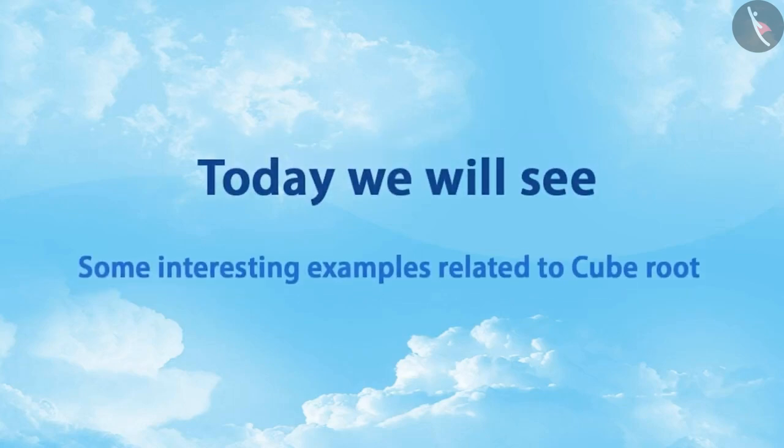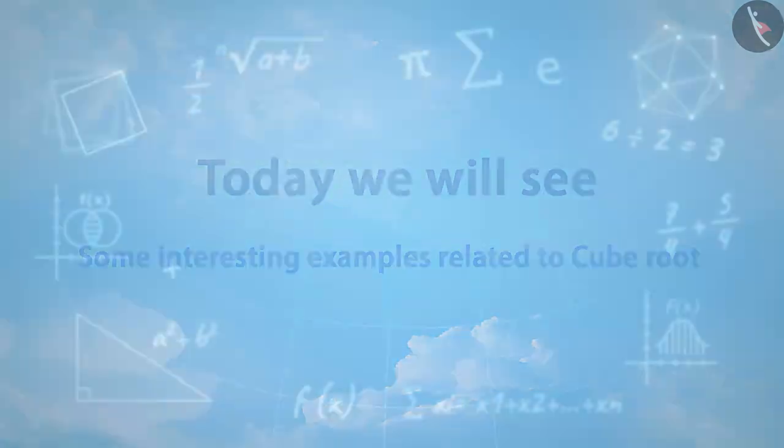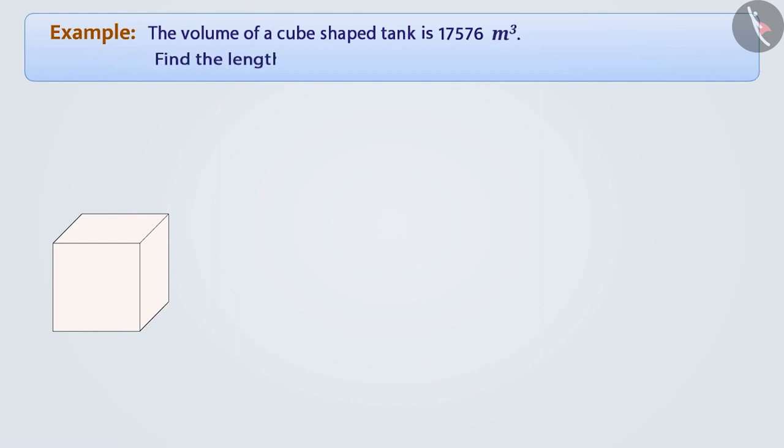Today we will see some interesting examples related to cube root. Example 1: The volume of a cube-shaped tank is 17,576 cubic meters. Find the length of its arms.